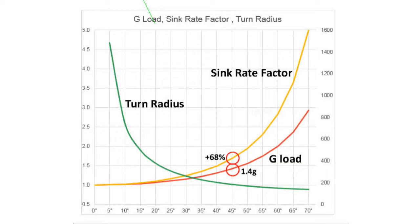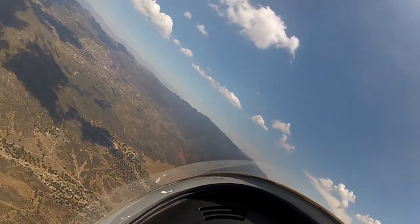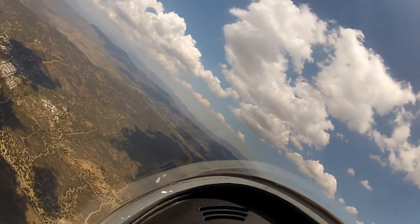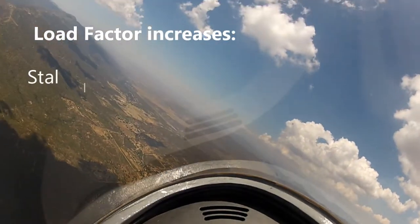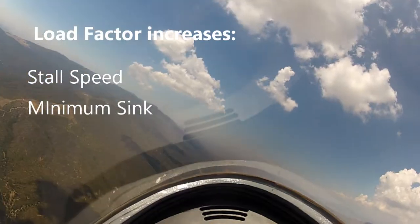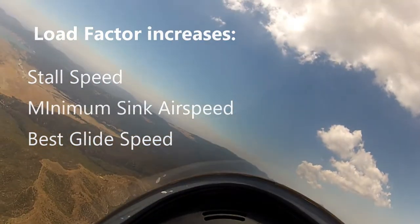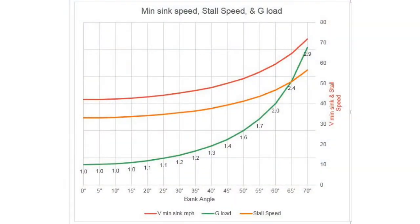Bank another 15 degrees to 60 degrees, and it's at 2 Gs with a sink rate increase of over 180%. That can't be good. So we'll clearly see that increased bank angle and G-load starts to be pretty costly in terms of performance. The heavier weight due to G-load also increases the stall, minimum sink, and best glide speeds, but at a lower rate than the G-load increase — in fact, it's at the square root of the G-load.